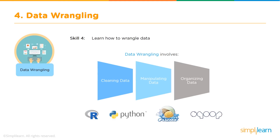Skill number four: data wrangling. Data wrangling involves cleaning data, manipulating data, and organizing the data. Some of the tools that are used are R, Python, Flume, and Scoop.